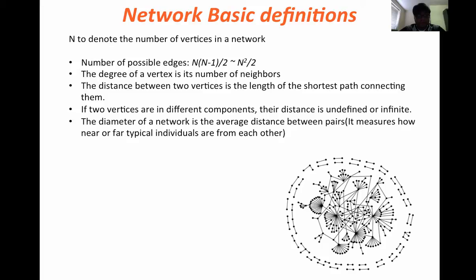Two vertices in different components have undefined or infinite distance. A big network can have two unattached graphs or two components — two big sub-graphs which are not connected. So the distance between two different sub-graphs which are not connected can be undefined. The diameter of the network is the average distance between pairs of nodes, and you need to consider the network as connected for calculating the diameter.